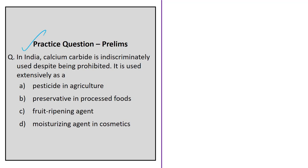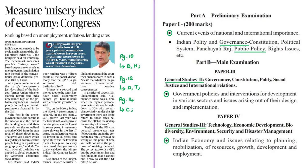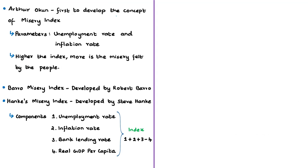Moving on to the next discussion. This news article mentions the demand raised by the Congress party that India's economy needs to be evaluated in terms of the Global Misery Index instead of the conventional Gross Domestic Product. In this context we will discuss what the Global Misery Index is. The relevant syllabus is given here for your reference. First, know that the misery index is not a regular publication like the Democracy Index or Global Hunger Index. The concept of misery index was first developed by American economist Arthur Okun.